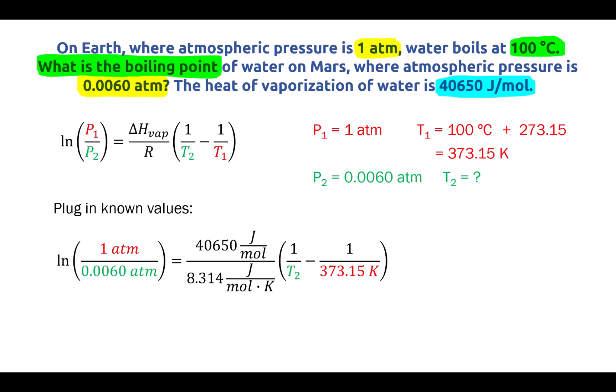It's important to use the gas constant that is in joules per mole Kelvin because that will allow us to cancel the units. Using this value of R 8.314 allows us to cancel the joules and moles in the equation. We're also canceling the units of atm in the ln.